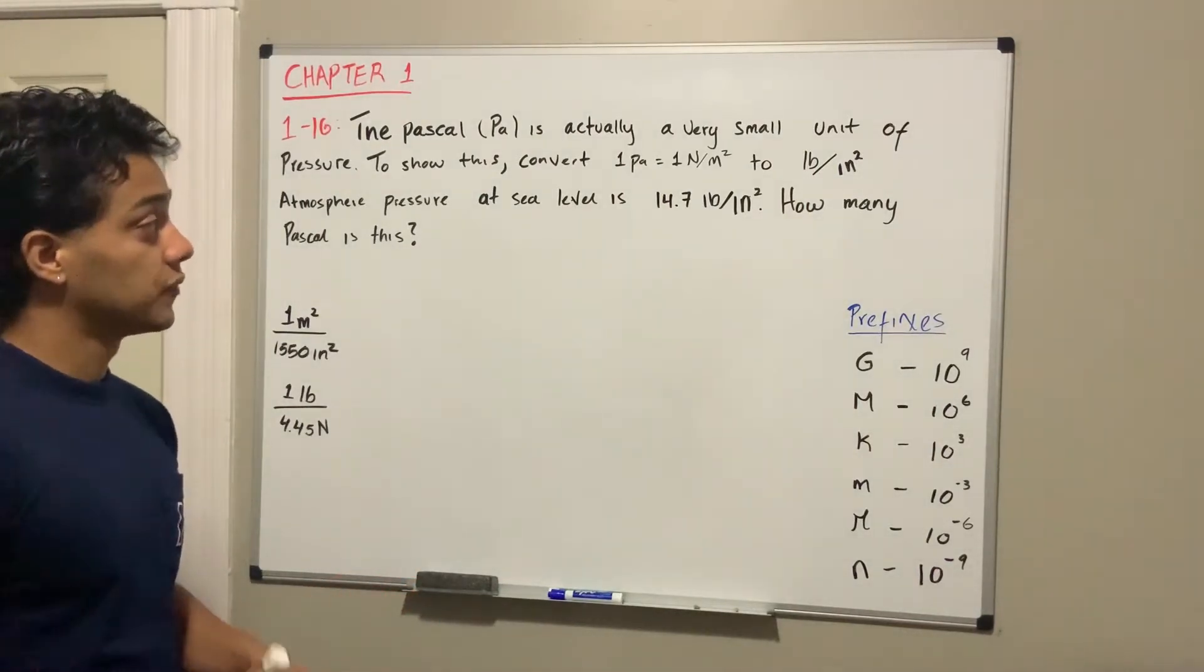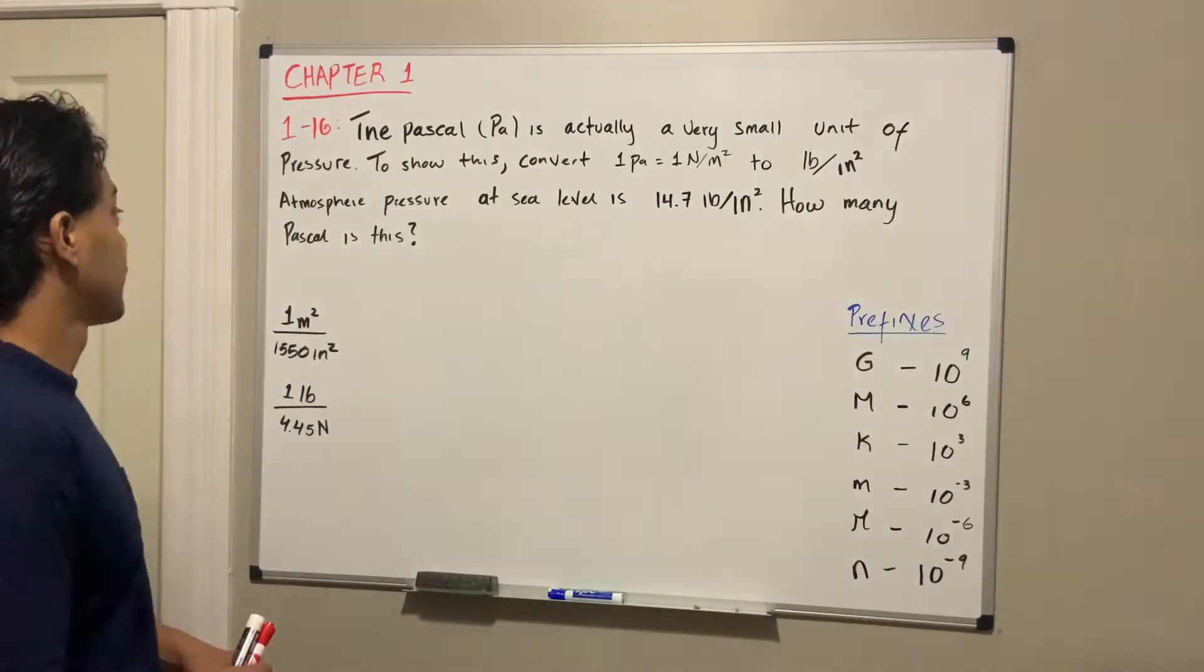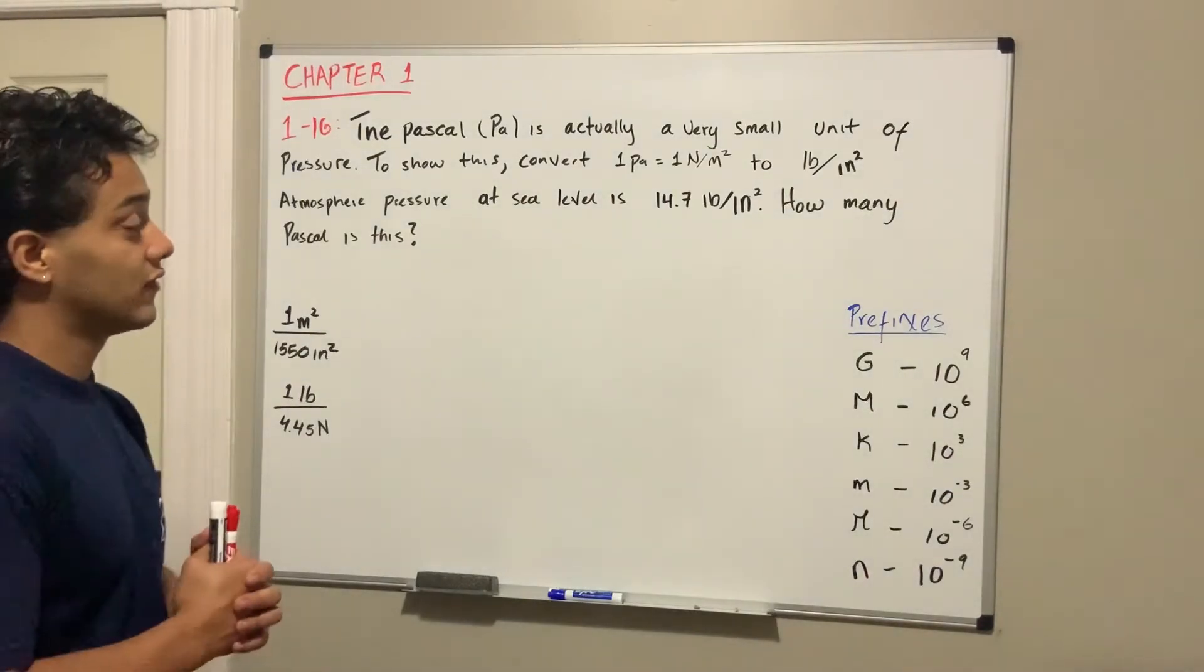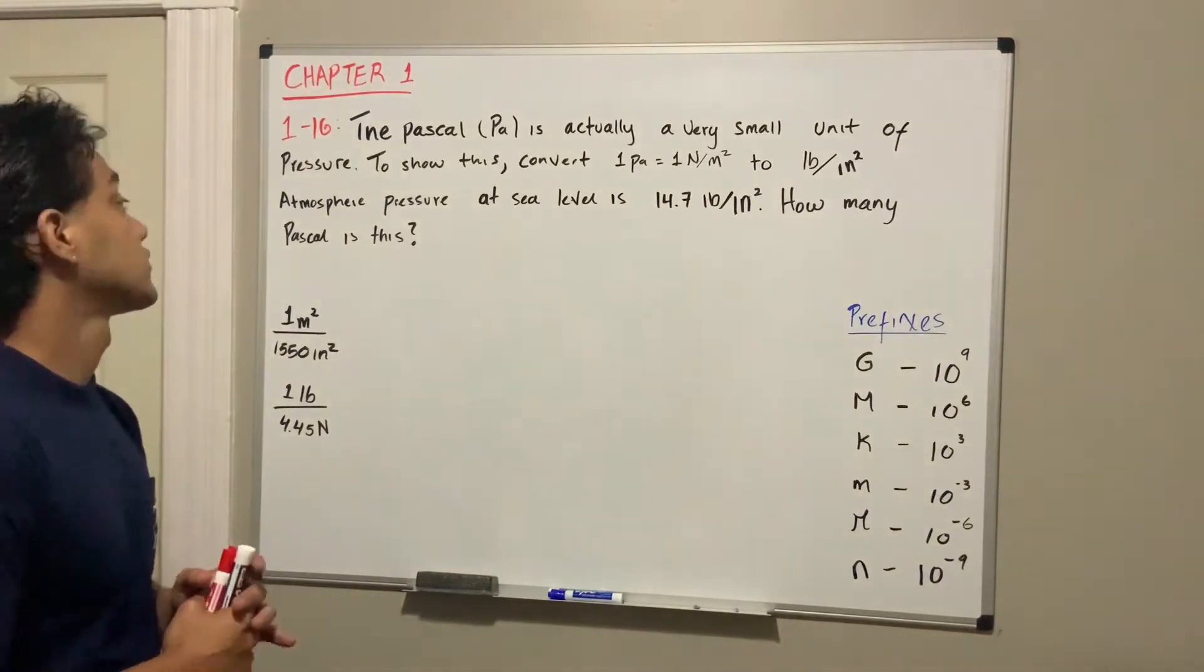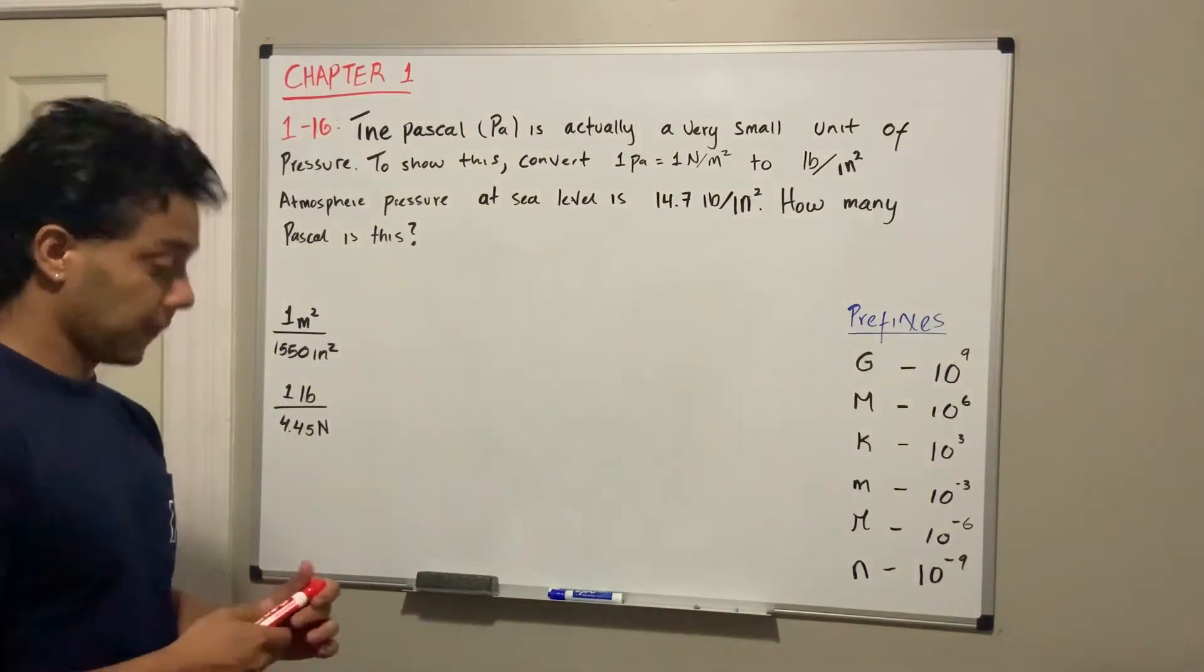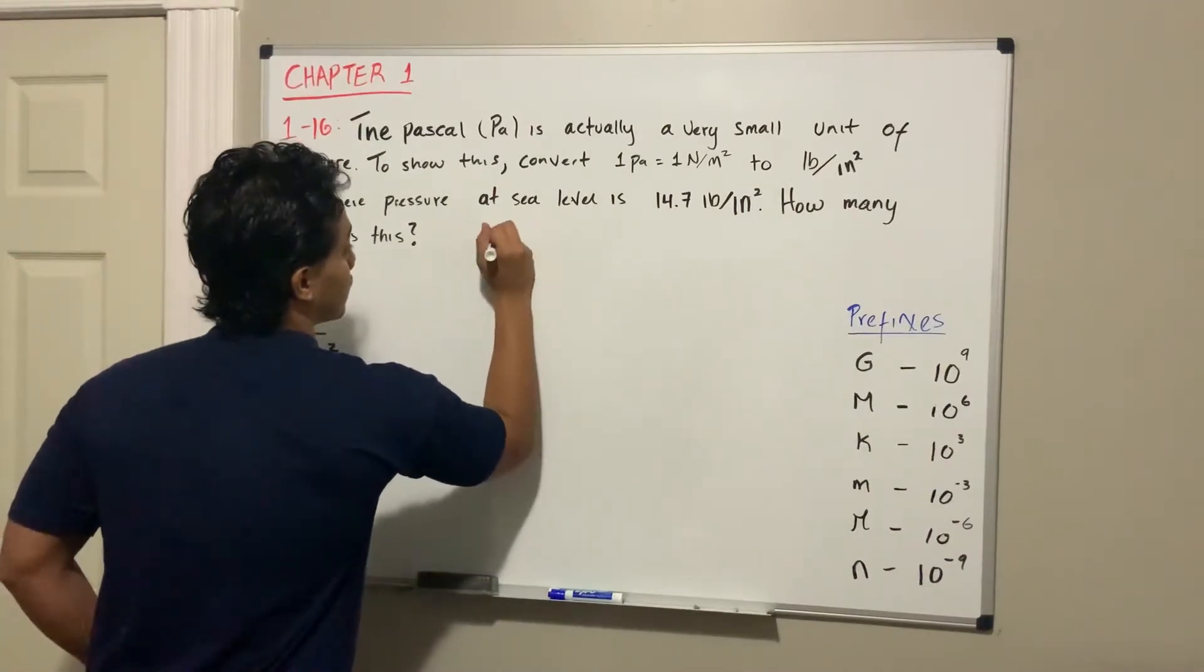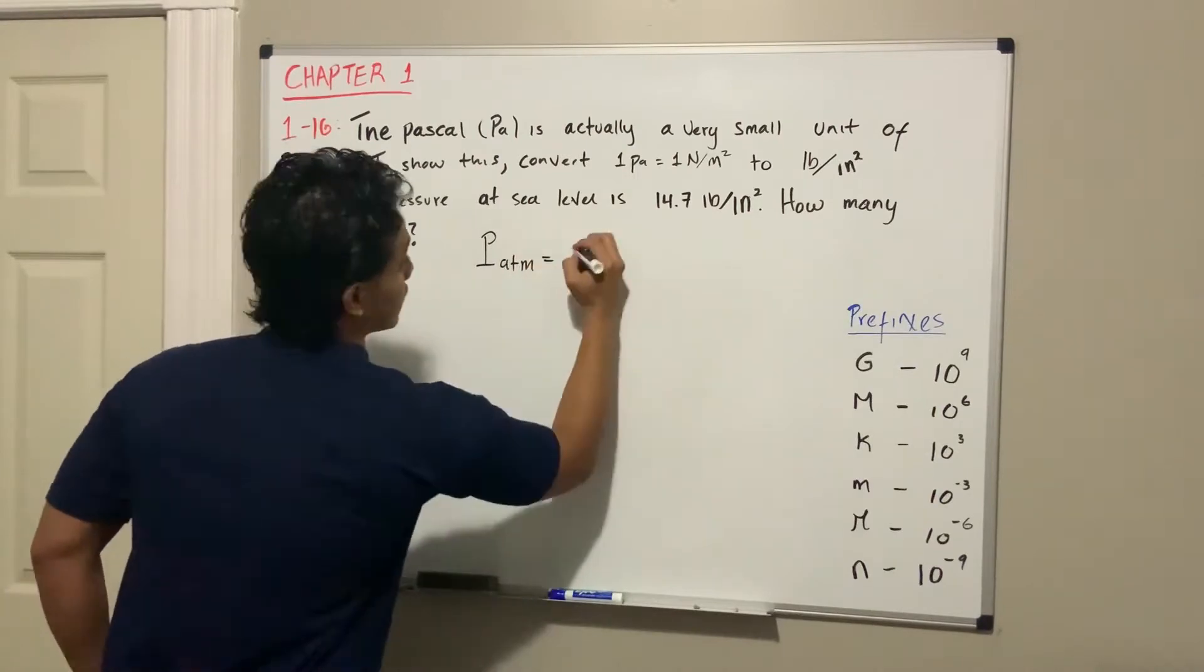1 Newton per meter squared, to pounds per inch squared. Atmospheric pressure at sea level is 14.7 pounds per inch squared. How many Pascals is this? The problem is giving us that atmospheric pressure equals 14.7 pounds per inch squared, and they want us to convert it into Newtons per meter squared.